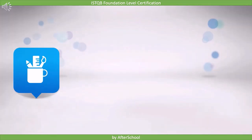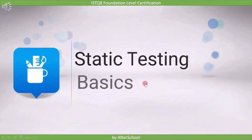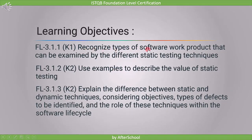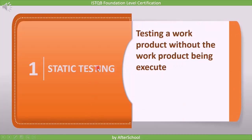In this lecture we are going to see static testing basics and cover the overview of static testing. There are three learning objectives in this session: first, recognize types of software work products that can be examined by different static testing techniques; second, use examples to describe the value of static testing; and third, explain the difference between static and dynamic techniques considering objectives, types of defects to be identified, and the role of these techniques within the software lifecycle. First, let's understand what static testing is: testing a work product without the work product being executed.